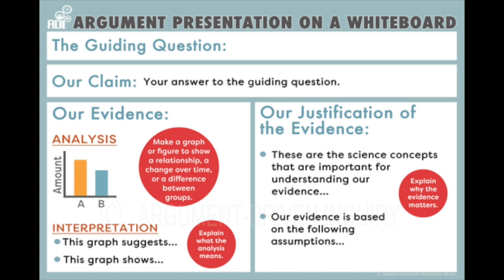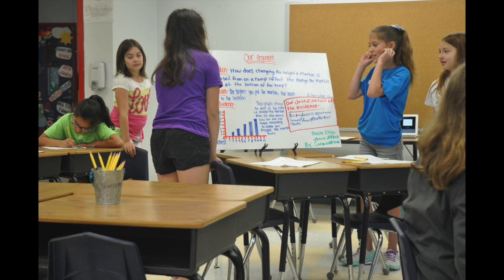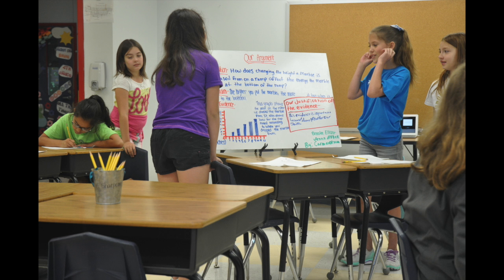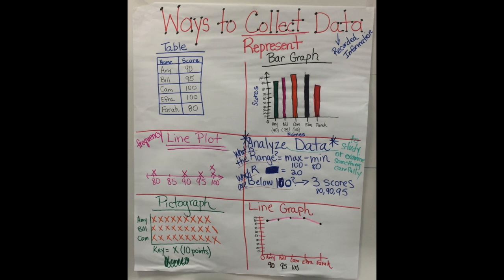One great way to help move them on from this stage is to use the argument on a whiteboard poster, which has sentence stems to use for what goes in each box. Another thing we sometimes see in the early whiteboards is all students using a bar graph to show their evidence. One way to help with this is to create a class anchor chart of ways to show what we know, so students can reference it when thinking about how to best show their thinking.